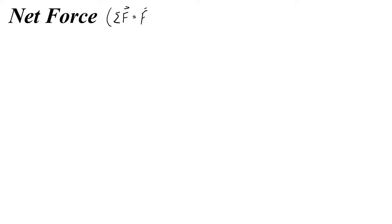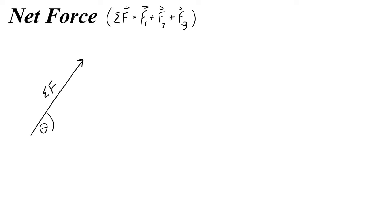It's going to be however many force vectors we have — maybe one, two, three. So that's what the net force is. It is its own vector, so we could draw an arrow, and the length of that arrow would represent the magnitude of the net force. There would be some angle theta representing its direction, and it would have x and y components. The x component we would call sigma Fx, and the y component we would call sigma Fy.